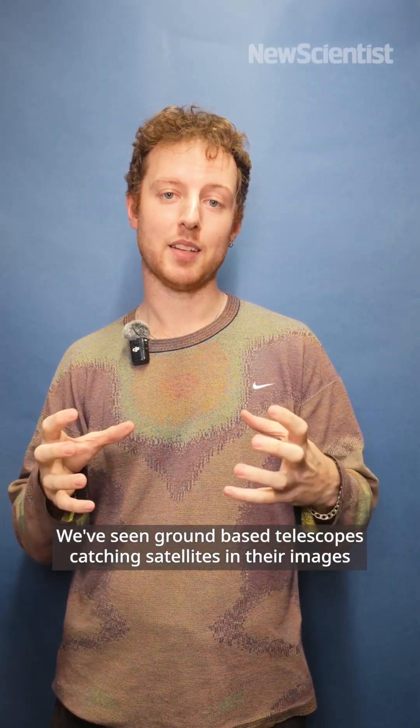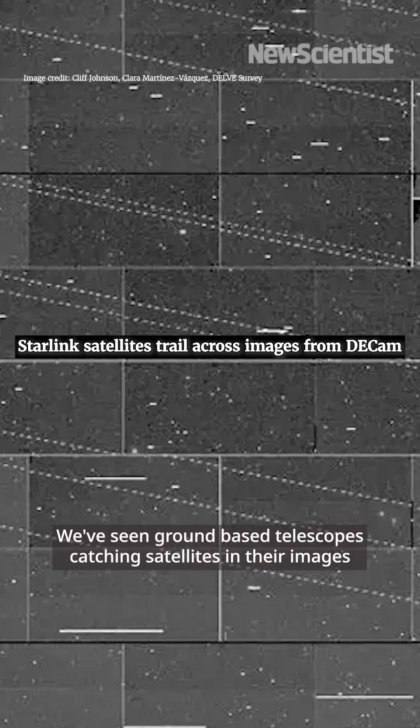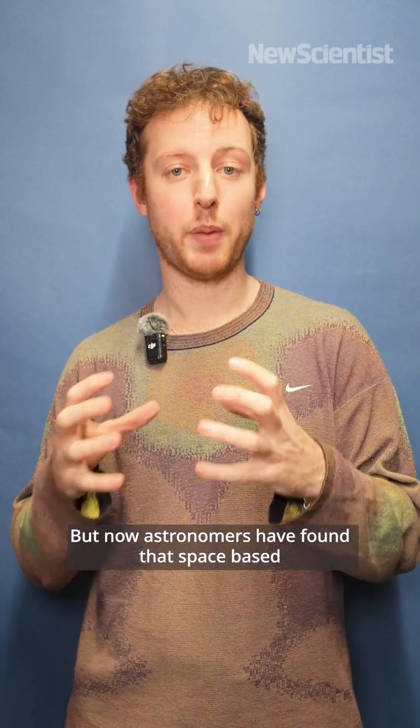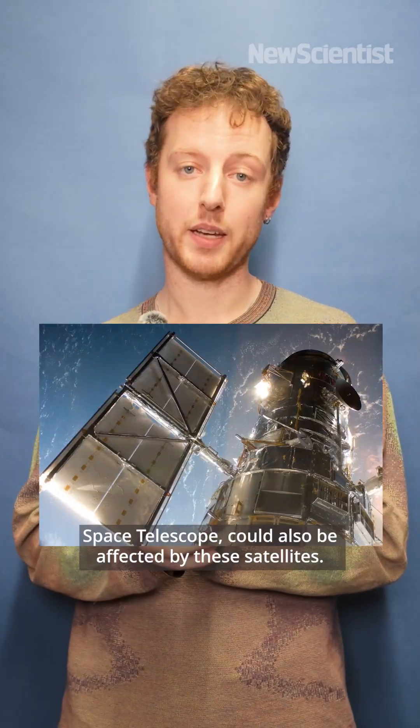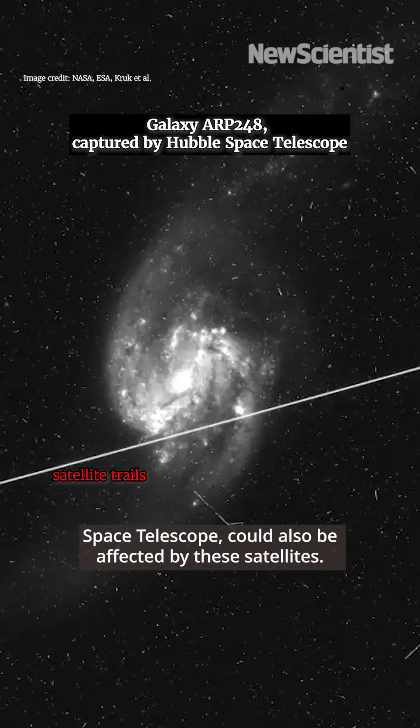We've seen ground-based telescopes catching satellites in their images and damaging operations, but now astronomers have found that space-based telescopes as well, like the Hubble Space Telescope, could also be affected by these satellites.